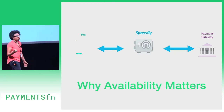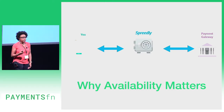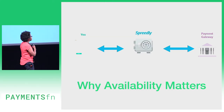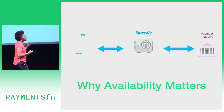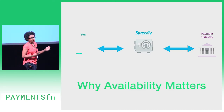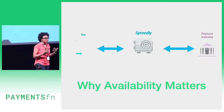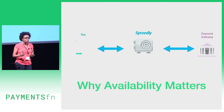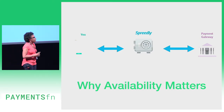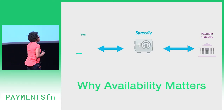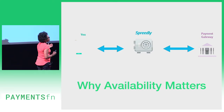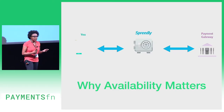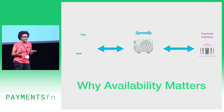Spreedly sits in an interesting place — we're between the merchant and the payment gateway. That means we have tons of transactions hitting us all the time, so we need to be available. If people don't get their money, they get very upset. Also, the way that we design our data means we don't really have to worry about inconsistency too often.